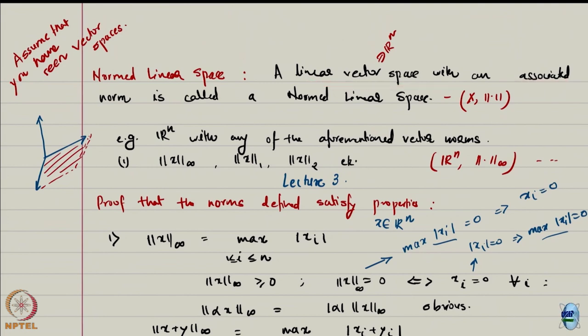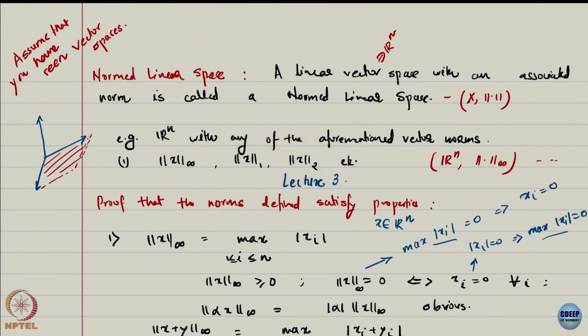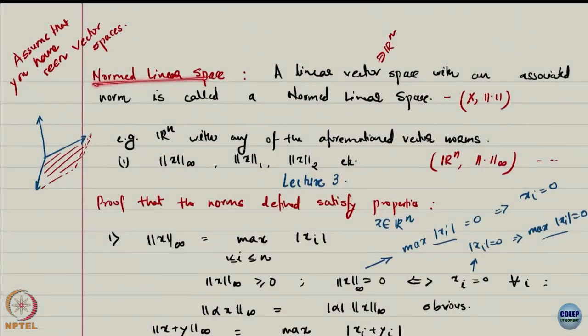We talk of normed linear space — it is essentially a linear vector space which has a norm. Just like we saw R^n with the infinity norm, the 2-norm, or the 1-norm, these are all normed linear spaces. Linear space and vector space are used almost identically, because vector space has linearity. Whenever we talk about linear structures in mathematics, we are invariably talking about vector spaces. So we say normed linear space, or you can also call it a normed vector space.